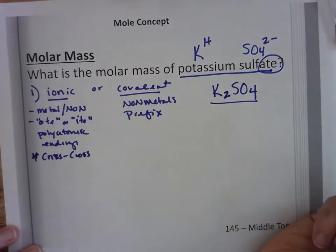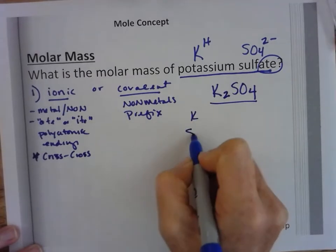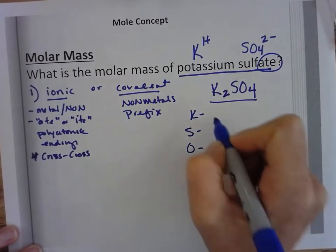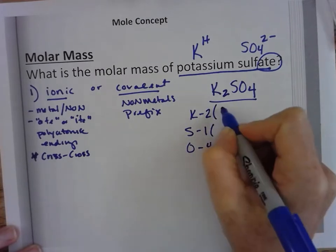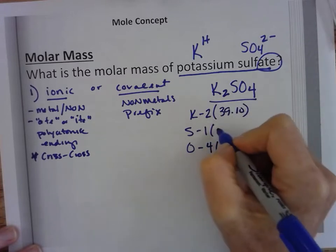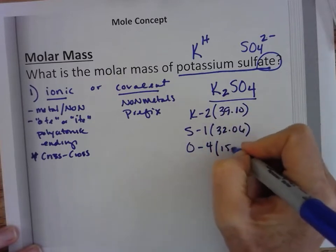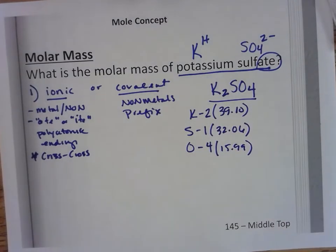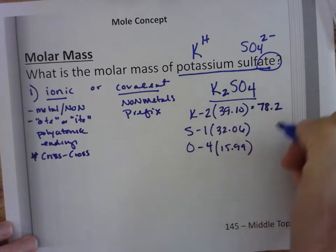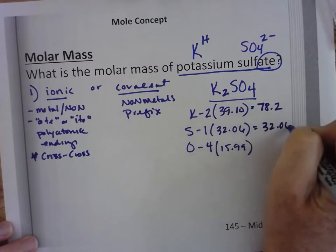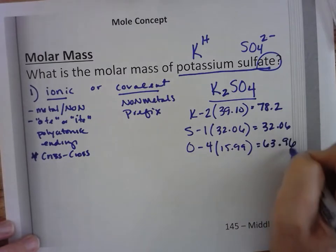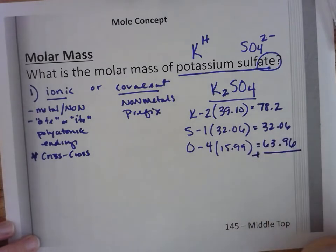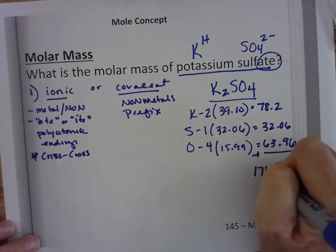Now we have to figure out the molar mass. I'm going to list the elements and how many of each that I have, then go to the periodic table and get their atomic masses, and then multiply. So this is 78.2, and this one is 63.96. I'm going to add those together and I got 174.22.